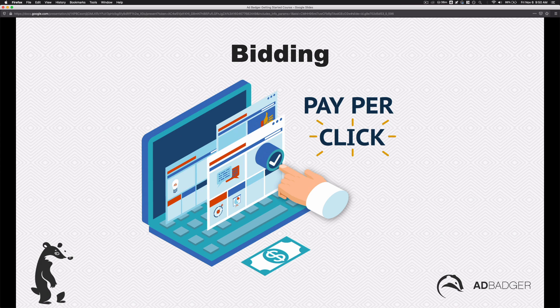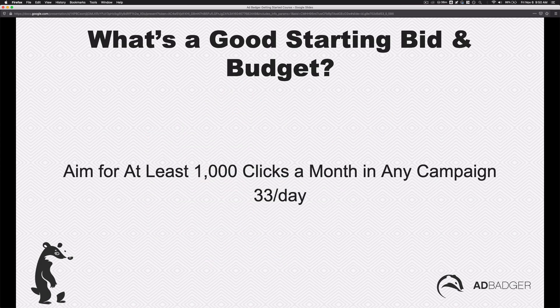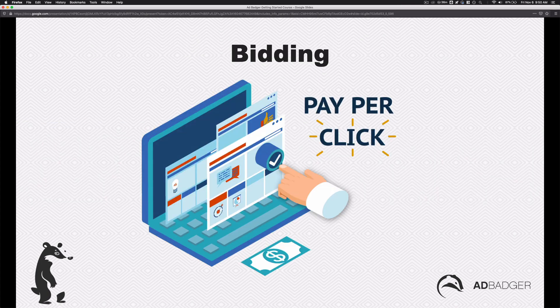So let's talk about bidding. Just to recap quickly, that ends up being about $33 a day if the average cost per click is about $1. So if you're in an industry with more expensive cost per clicks, you're going to want to modify this. This is pay per click bidding on Amazon — most campaigns are pay per click, meaning we only pay when somebody clicks. And our bid determines where we show up, how we show up, and whether our competitors appear above or below us.